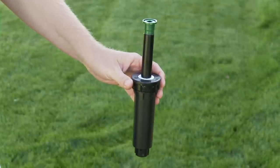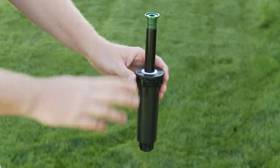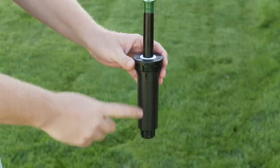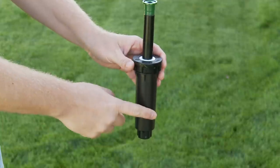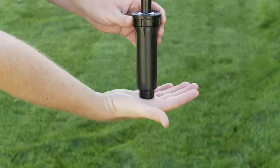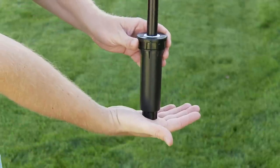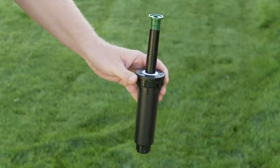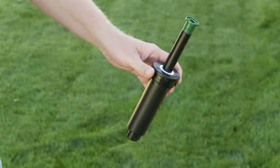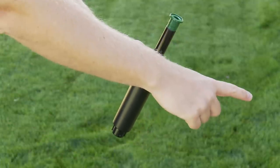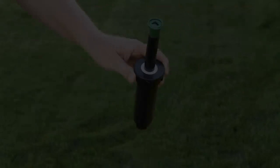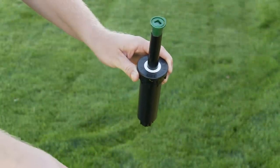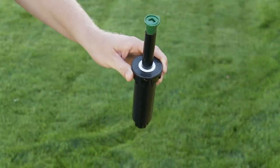Before you begin your catch cup test there are a few things you want to look at. You'll want to make sure that your heads are vertical, as close to straight up and down as you can get them or perpendicular to the surface they're on if it's a sloped area. If they're not vertical and the head is tipped to the side, this side is going to get watered in close and this side out far. If it's tipped forward, the spray is going to go into the ground and isn't going to water the area it's supposed to cover.